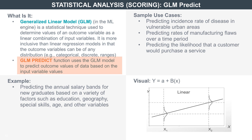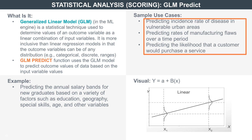The GLM PREDICT function takes the GLM model and scores all data using that model, much like the other PREDICT functions. Use cases for GLM PREDICT include predicting the incidence rate of disease in certain areas as the population changes, or predicting the rates of manufacturing flaws as the product matures.